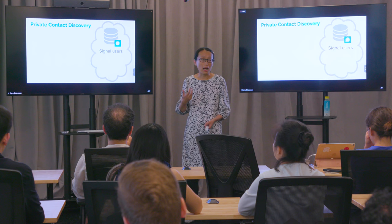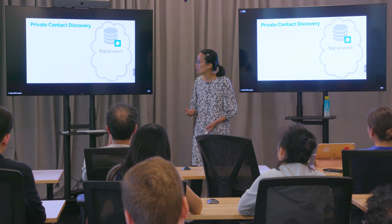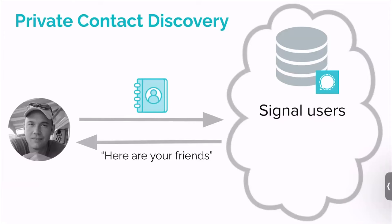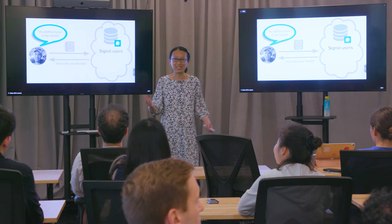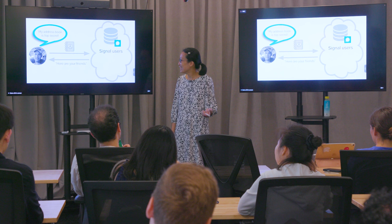Let me begin with the Signal story. Signal is a private messenger app that provides end-to-end encryption for messages. They also want to support private contact discovery — Tim sends his address book to Signal, and Signal tells Tim which friends are also on Signal so he can connect and send them messages. This is a very useful feature, but Tim is worried his contacts are top secret, so he's hesitant to do that.